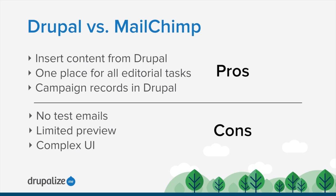The downside of using Drupal to send these campaigns is that Drupal doesn't provide a way to send test emails — though you can still log into MailChimp after saving the draft and send a test from there. The preview in Drupal is somewhat limited; it shows you content but doesn't show how it'll look in an email client the way MailChimp does. The user interface can also be a bit more tricky, especially for templates with many regions. For simpler templates it's intuitive, but with many regions it can get overwhelming.